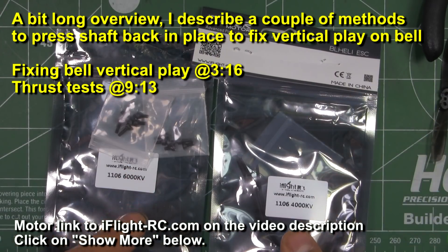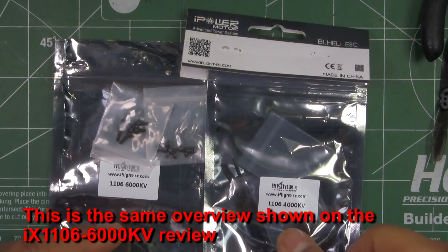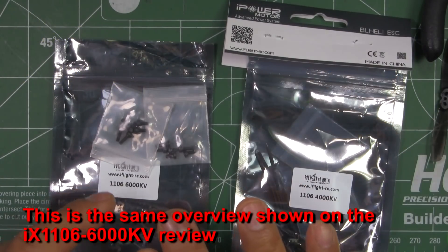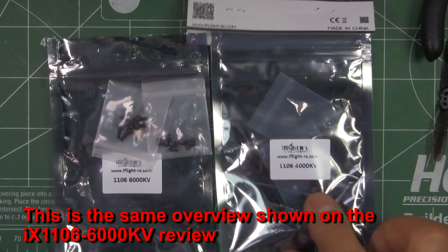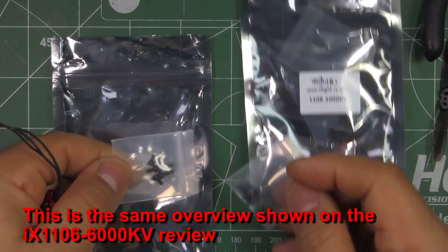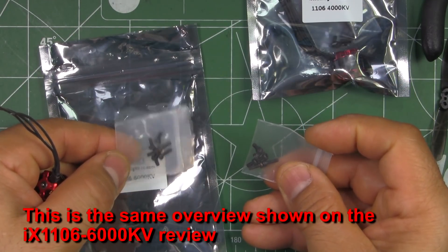So motors come in these anti-static bags, the annoying ones that make noise, and they come two per bag, so they send you two motors in one of these little bags and they give you the basics four M2 mounting screws.